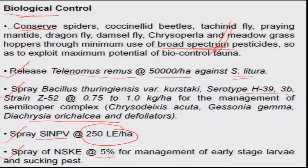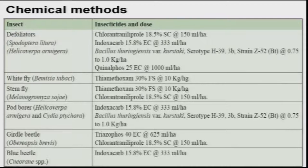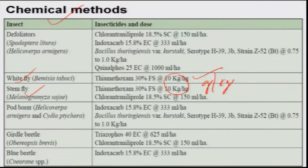The botanical spray of neem seed kernel extract at 5 percent is recommended for management of defoliators and sucking pests. Insecticides form the chemical component of IPM, with specific recommendations for specific pests. For white fly and stem fly, thiamethoxam seed treatment is most effective — importantly, the dosage is grams per kg of seed, not kg per hectare.